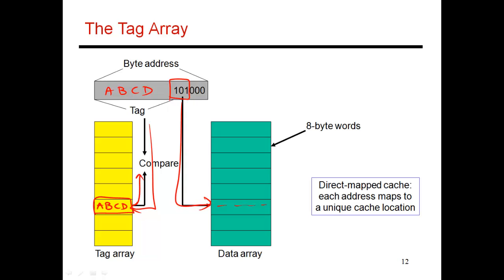So I'll do a comparison to see, well, it looks like ABCD has been stored. I'm looking for ABCD. There's a match. So the data that has been stored in this data array is exactly the data that I'm looking for.